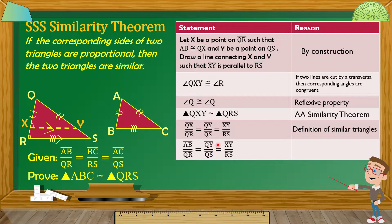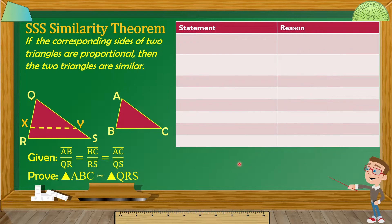Statement 6: AB over QR is equal to QY over QS equals XY over RS. Papalitan natin si QX dito ng AB — ito lang naman nagbago — pinalitan natin ng AB. Kasi dun sa unang statement natin sinabi natin na si AB ay congruent kay QX, kaya pwede natin palitan si QX dito ng AB. Yung reason natin dyan ay by substitution. Statement 7: AB over QR is equal to BC over RS equals AC over QS — that is given.